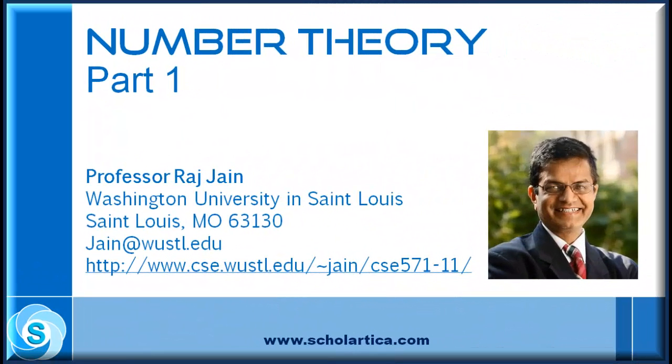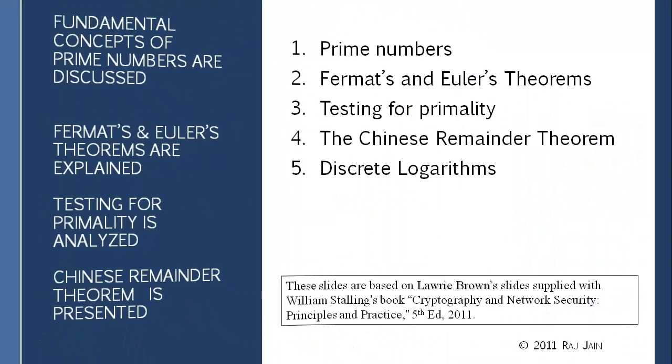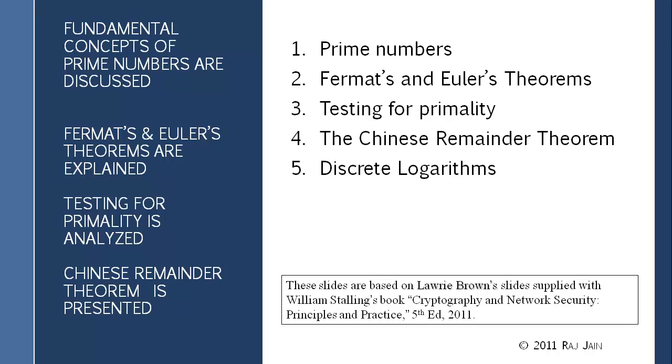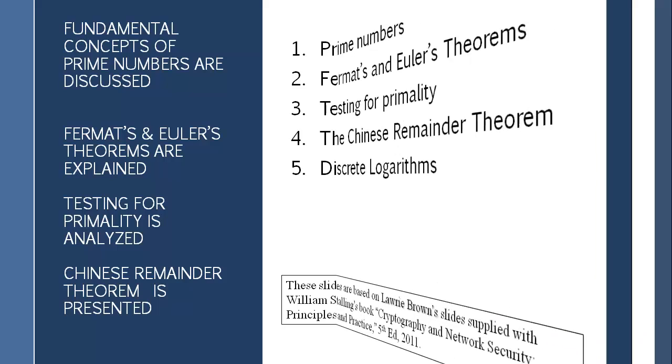This is introduction to number theory, a bit more of that before we get into the public key. Public key is chapter 9, but for public keys we need some more mathematics. We talk about prime numbers, Fermat's and Euler's theorem, testing for primality, Chinese remainder theorem and discrete logarithms because all of these are required for the public key.